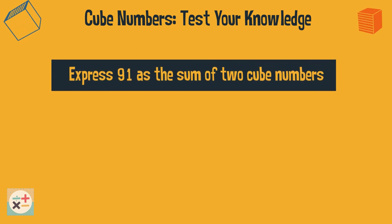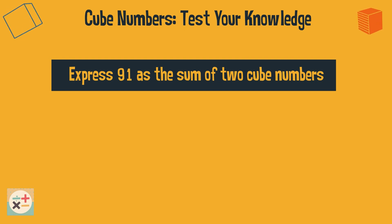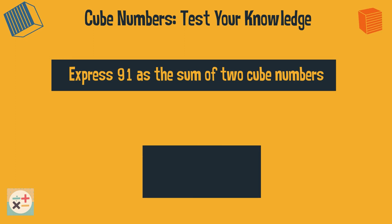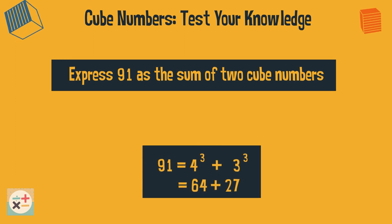Question 7. Express 91 as the sum of 2 cube numbers. 91 equals 4 cubed plus 3 cubed, which equals 64 plus 27.